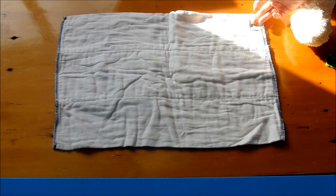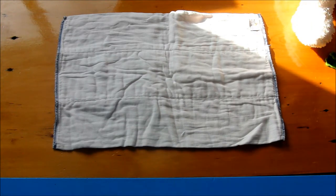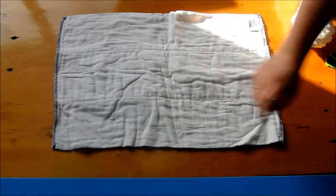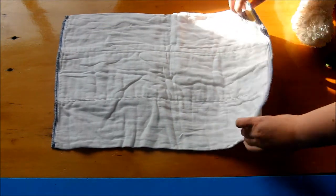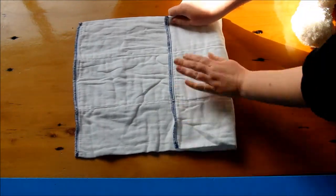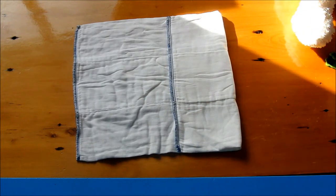This will be the front of the diaper and that'll be the back. We fold about a quarter to a third of the front up, depending on how large or long your prefold is and of course how big your baby is.